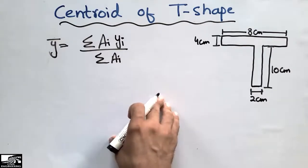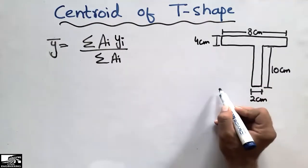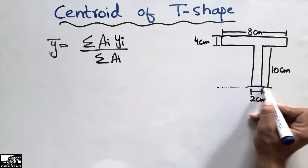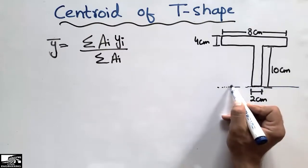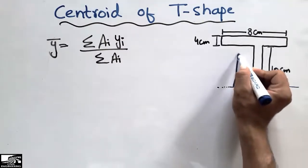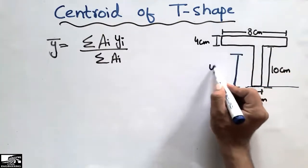Now to start finding the centroid of this T-shape, first I will take the reference line, this is the reference line from the bottom. So I will find my centroid from this upward, in this direction. It may be somewhere in this portion but I don't know where is my centroid here.